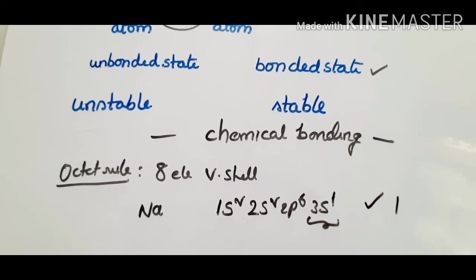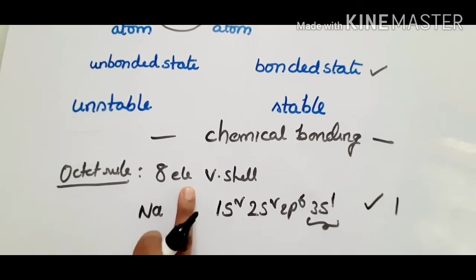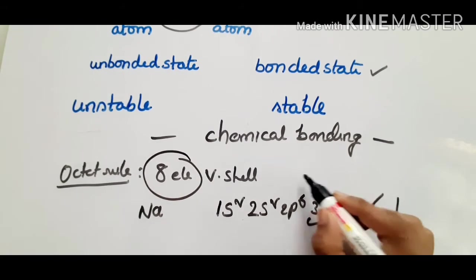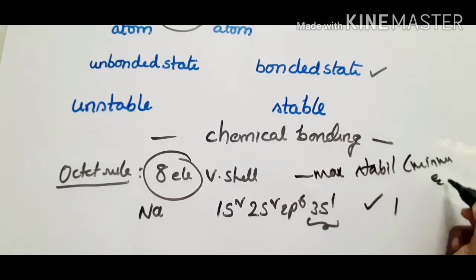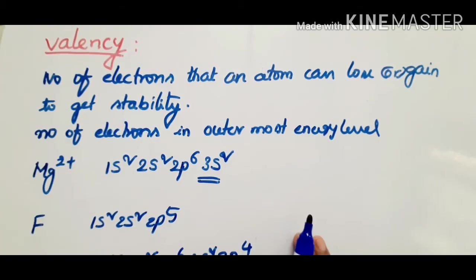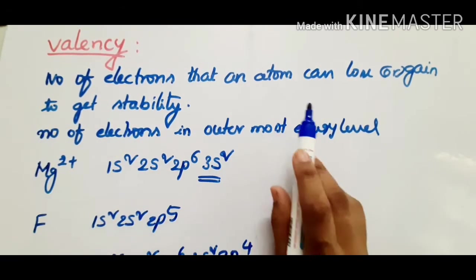What is valency? We are coming to that point. Valency is the number of electrons that an atom can lose or gain to get stability. An atom stabilizes itself by losing or gaining electrons to achieve a complete outer shell.